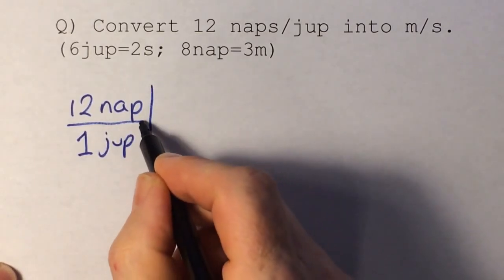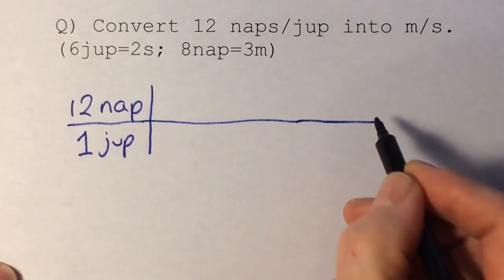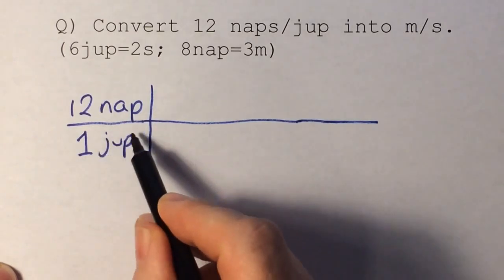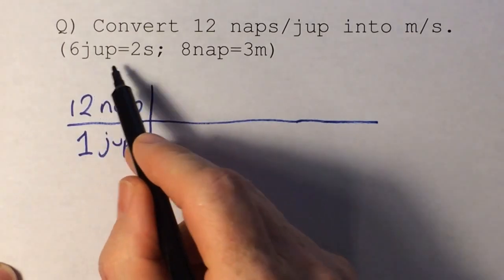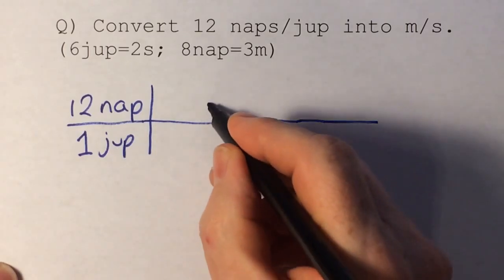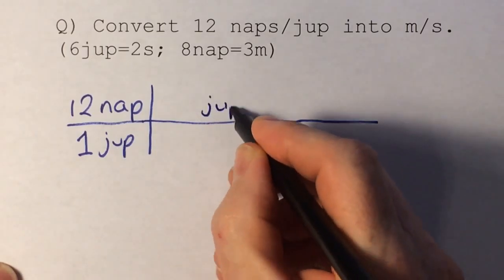So there's my original statement, and now I need to do some conversions. Doesn't matter which way I go, let's take the jop first. Jop is on the bottom here, and I'd like to get from jops into seconds, and the way I'll get rid of jops is by putting jops on the top here.